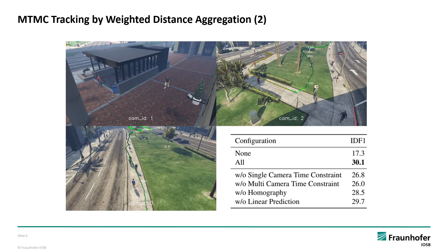Here you can see a ground truth track in green and formerly single camera tracks which have been associated to a multi-camera track. We were also able to obtain an IDF1 score of 30.1% when using all distances, compared to 17.3% when connecting single camera tracks randomly.